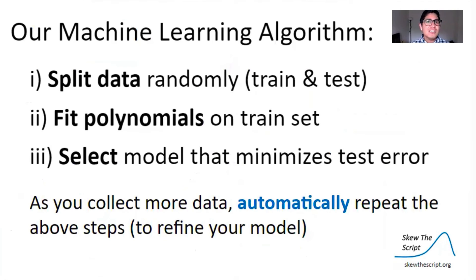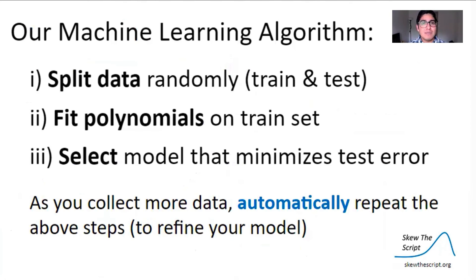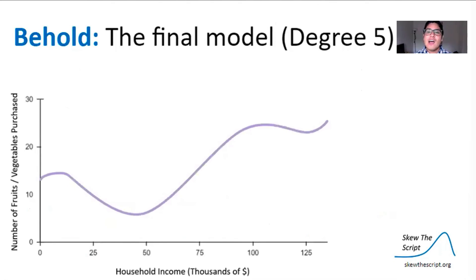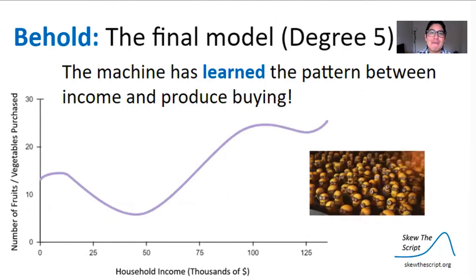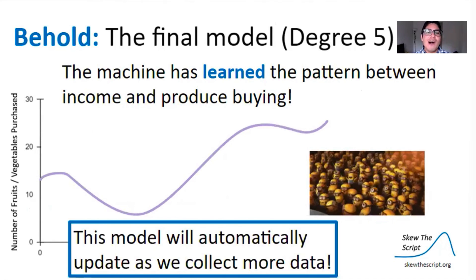To recap: machine learning involves splitting data randomly into the train set and the test set, fitting polynomials onto the train set, and then selecting a model that minimizes error on the test set. As you collect more data, you automatically repeat these steps to refine your model. And now behold the final model — the machine has learned the pattern between income level and produce buying, and this model will automatically update as more data is collected.